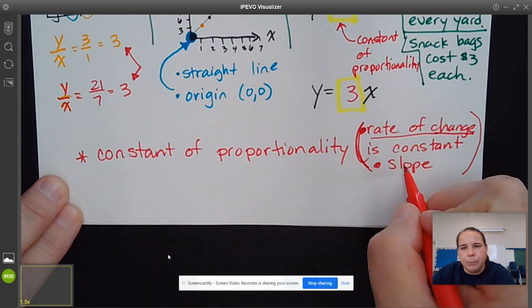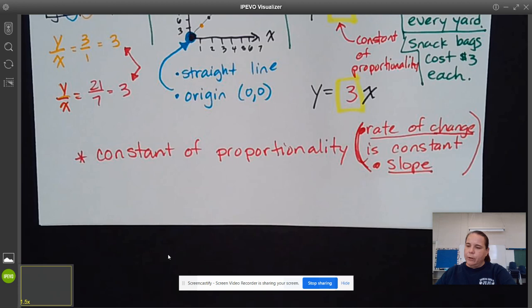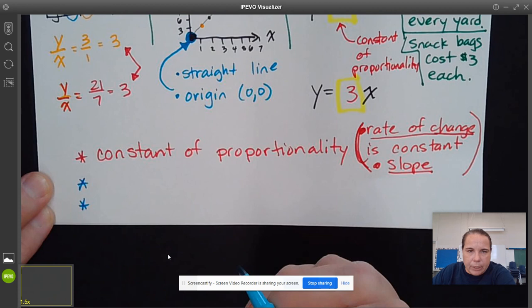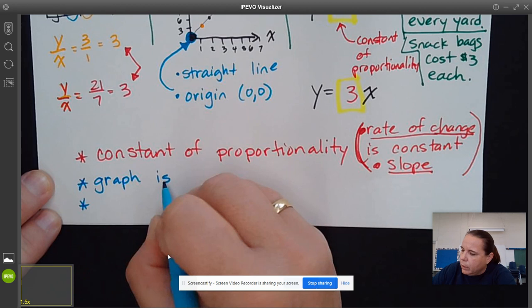But I'm just getting you started right now that these are some things we want to think about. And the other concepts of proportional relationships - on a graph, the graph is a straight line.